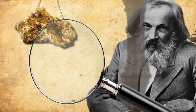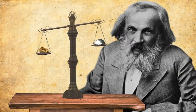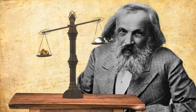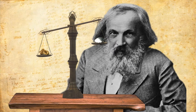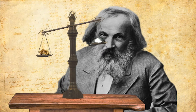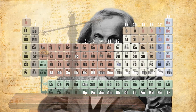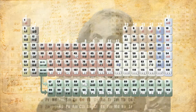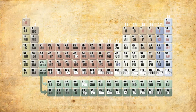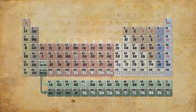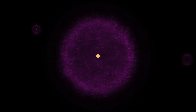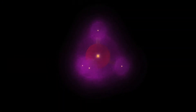Mendeleev's system was based on atomic weight, and today we know that the organization of elements and also the basic chemical properties are due to the atomic number — basically the element's number of protons. We have to give Mendeleev a break here since the atomic model was not actually discovered until 1913.